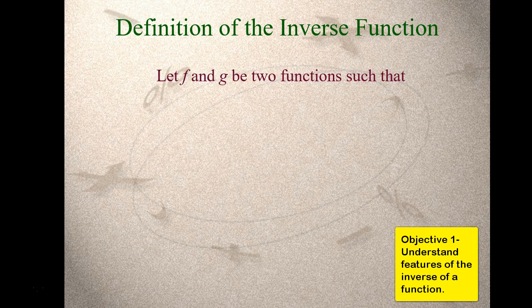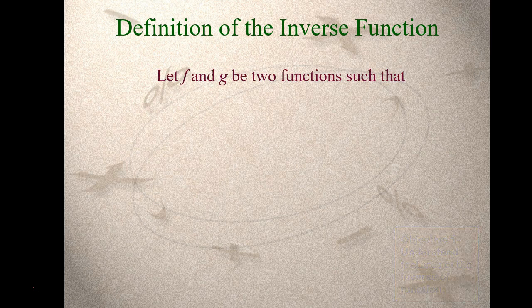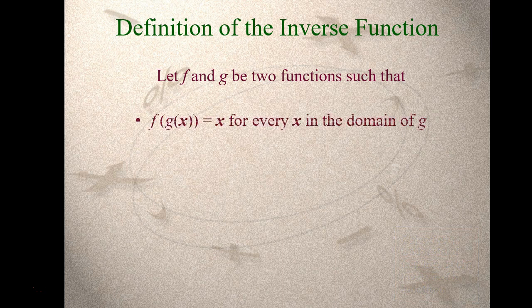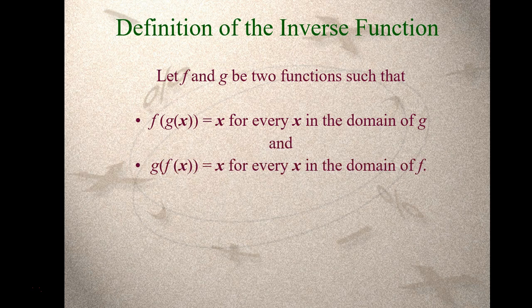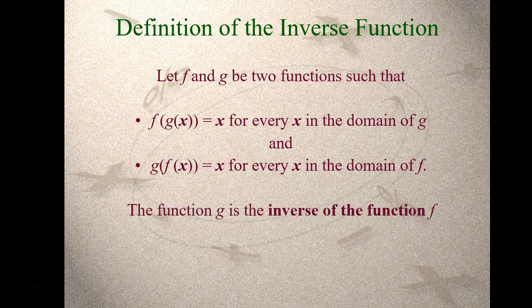Algebraically, the definition — this is an important definition — if the two functions are f and g, if we did f composition g of x and when we simplified it we got x, and likewise if we did g composition f and when we simplify it we get x, then that tells you the two functions are inverses of each other. They have to both undo each other down to just x. The domain and range values, like we said, are all swapped for these.